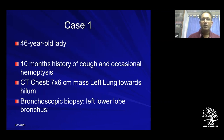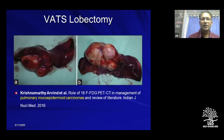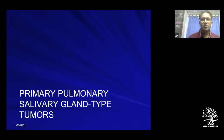A 46-year-old lady presented with a 10-month history of cough and occasional haemoptysis. A CT chest showed a 7×6 cm left hilar mass. Bronchoscopy biopsy showed an epithelial neoplasm. A PET-CT scan confirmed a 7×6 cm mass in the left lower lobe. We proceeded to lower lobectomy, and histology came back as a pulmonary mucoepidermoid carcinoma — demonstrating that the scope of salivary gland neoplasms is not restricted to major salivary glands but can occur anywhere in the aerodigestive tract.